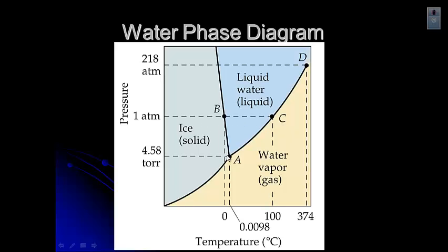Now, the triple point you can see is at 4.58 torr. It is extremely low. I cannot get to that low of a pressure using my vacuum pump. But you can see if you lower the pressure, you can see what happens to the boiling point.